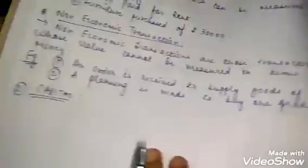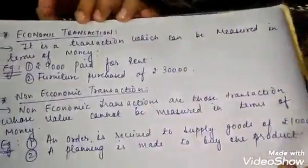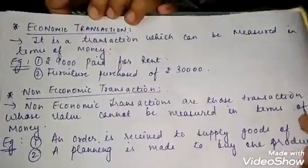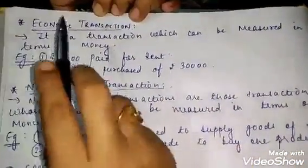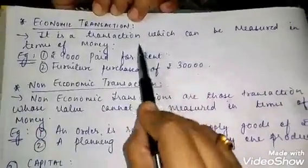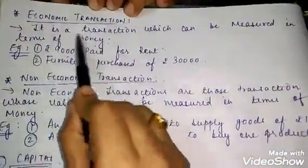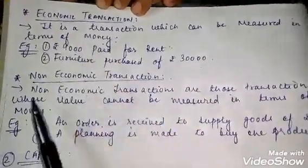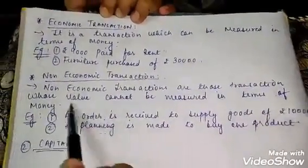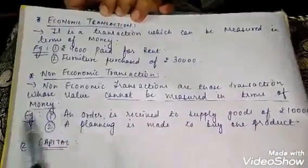An economic transaction is one which can be measured in terms of money. A non-economic transaction is one whose value cannot be measured in terms of money.